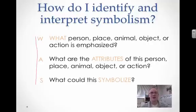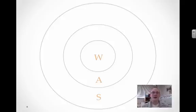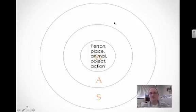So let me walk you through that using sort of a visual tool. And I encourage you to get this down in your notes as well. So in the center of this tool, we have the W for what's the object, action, person, etc. The second level of symbolism is deciding what attributes that thing has. And finally, once we've decided what attributes it has, we decide on what it might symbolize.